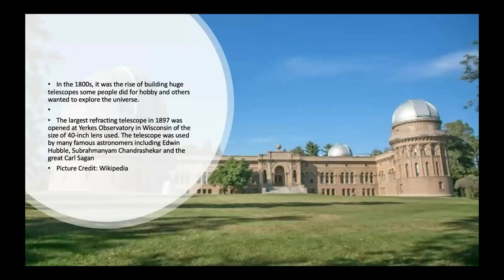In the 1800s, it was the rise of building huge telescopes. Some people did it for hobby and others wanted to explore the universe. The largest refracting telescope in 1897 was opened at Yerkes Observatory in Wisconsin with a size of 40-inch lens. The telescope was used by many famous astronomers, including Edwin Hubble, Subramaniam Chandrasekhar, and the great Carl Sagan.